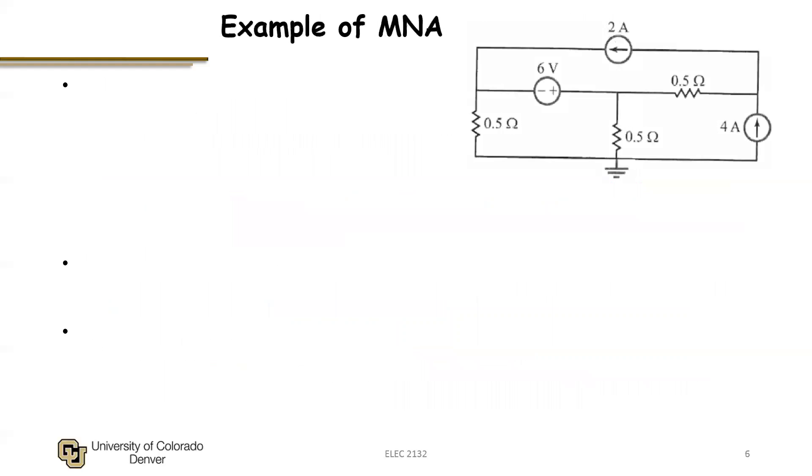But that would eliminate the need for supernodes and would also lead to a symmetric system for a passive type network. Okay, so let's look at an example of a modified node analysis. Here we have the circuit which has two current sources, a voltage source, and of course we have a ground defined which helps us identify a reference node.